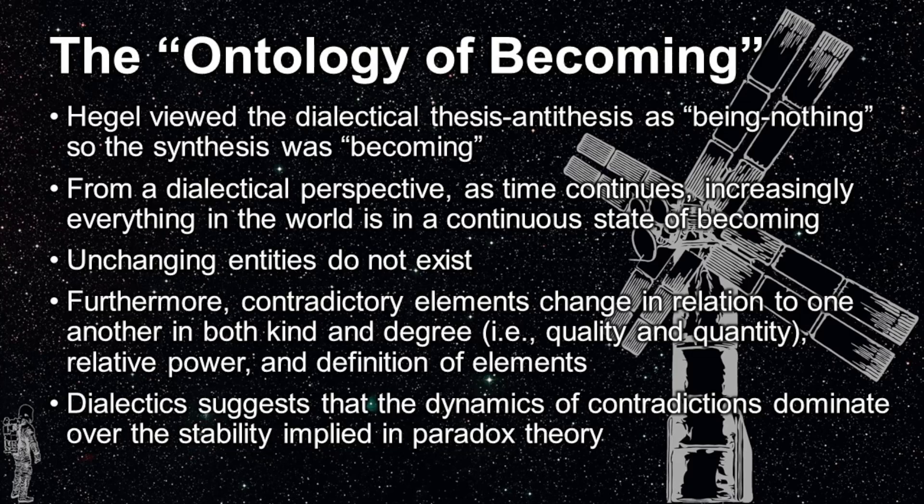Furthermore, contradictory elements also change in relation to one another and in many ways, including in kind and degree, quality and quantity, relative power, and even the basic definition of the contradictory elements. Finally, dialectics suggest that the dynamics of contradictions dominate over the stability of contradictory elements implied in paradox theory.